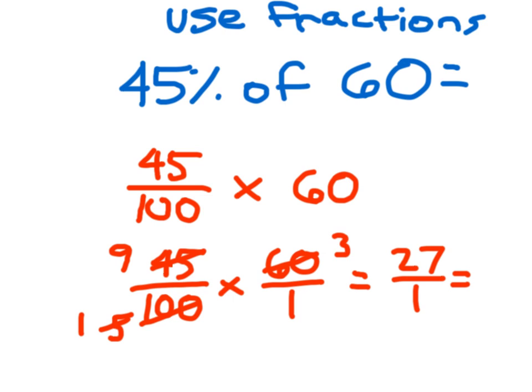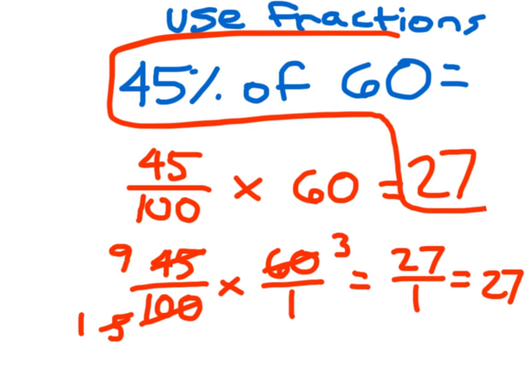9 times 3 in the numerator is 27, and in the denominator I get 1, and 27 over 1 is 27. So 45 hundredths times 60, or 45% of 60, is 27. 27 is our answer there for that problem. We used fractions.